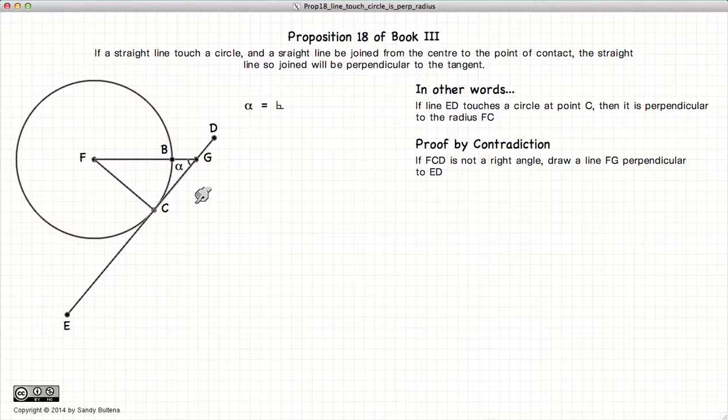...construct a line FG such that FG and ED are perpendicular to each other. In other words, alpha is a right angle.